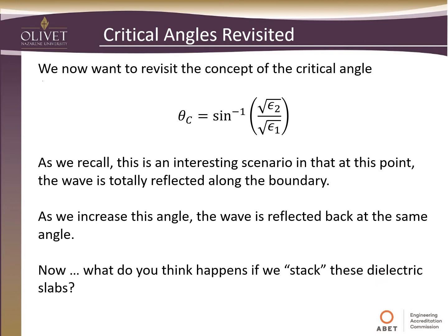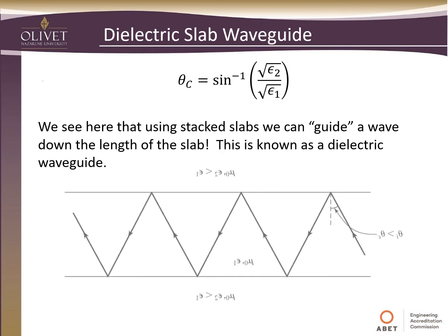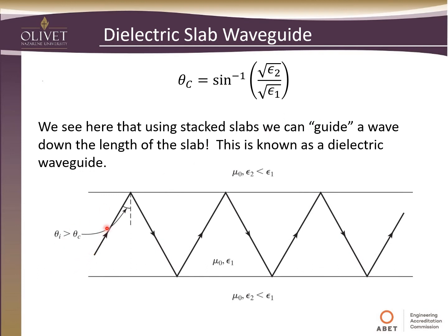The clever idea engineers had was: what if we stack these dielectric slabs? What if we create another type of waveguide? This is what's known as a dielectric waveguide. We come in at this critical angle, and if we increase the angle beyond the critical angle, it will bend the wave back — it'll actually reflect it back. With the same material on top and bottom and a different material in the middle, we can make this reflect back over and over and guide the wave down the waveguide using total internal reflection.